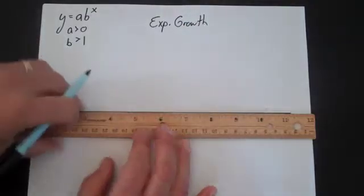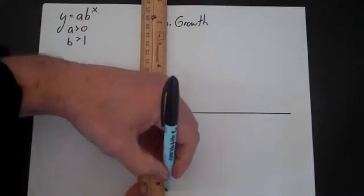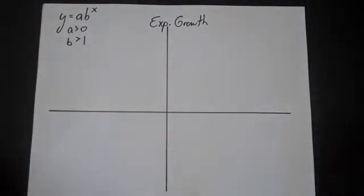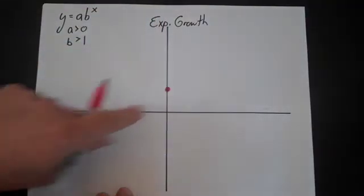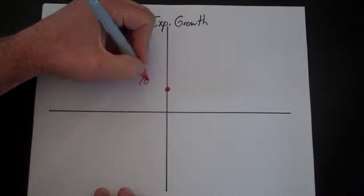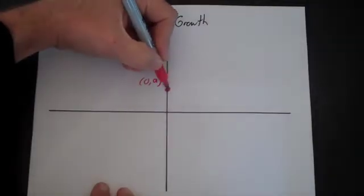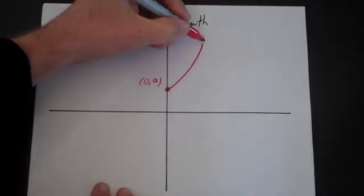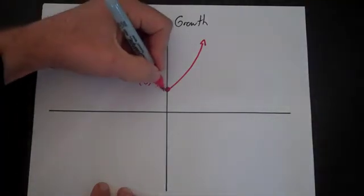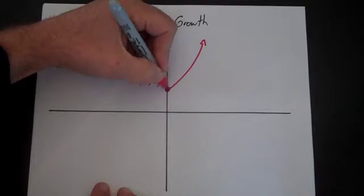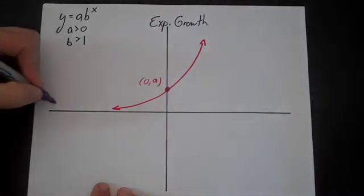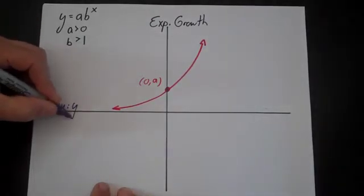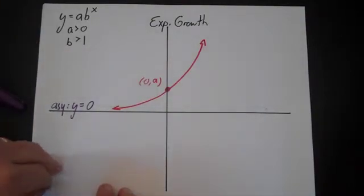If we think about what the graph looks like, the initial value is going to be a, in this case a positive number. At x equals zero, y equals a. As x increases, y grows exponentially. As x decreases, y decreases less and less until it approaches an asymptote at y equals zero. This is the classic exponential growth problem.